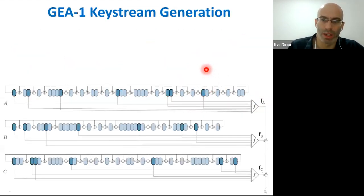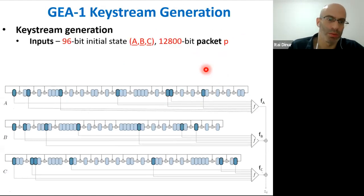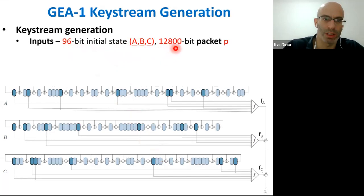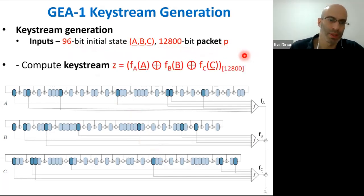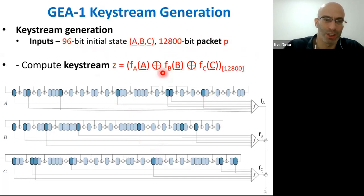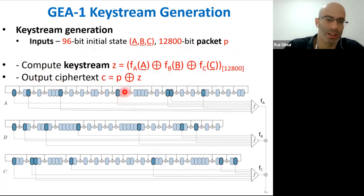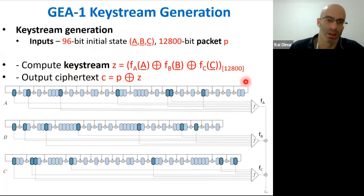The inputs to keystream generation are the 96-bit initial state ABC and the 12,800-bit packet P. We produce 12,800 bits of keystream by storing the outputs of the three registers. The ciphertext is just the XOR of the keystream with the plaintext — you produce the keystream and then XOR it with the plaintext to output the ciphertext.